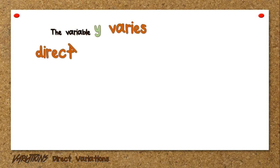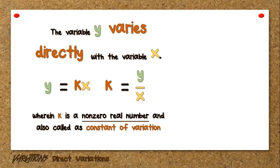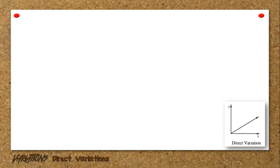Let's start with direct variations. Direct variation states that the variable y varies directly, or is directly proportional, with the variable x. Remember the keywords 'varies directly' or 'directly proportional,' which can be translated mathematically as y equals k times x, or equivalently k equals y over x, wherein k is a non-zero real number also called the constant of variation.